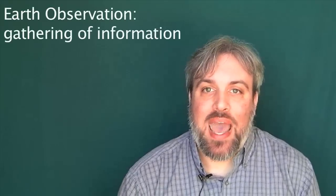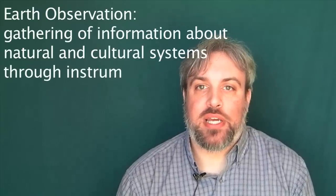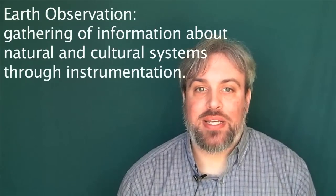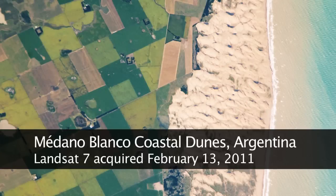Now, Earth observation, definition-wise, is gathering of information about the natural and cultural systems through instrumentation. These are generally at a distance. You have, of course, airplanes and helicopters with sensors mounted to them. You have satellites orbiting the Earth that are observing the Earth as well. And all of these different sensors are up there collecting information for Earth observation.